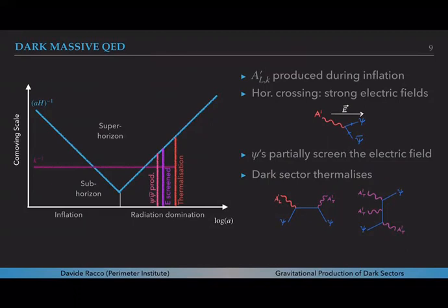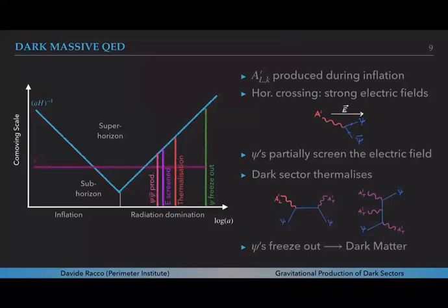With this diagram the longitudinal degree of freedom converts into a transverse one by scattering. Important processes are number changing processes like this one because we need to decrease the large number density of vectors we have at the beginning to get to a thermal state. Once we have this thermal bath of particles in the dark sector which is decoupled from the standard model bath, at some point there will be the standard freeze-out story. When ψ the dark matter becomes non-relativistic, the annihilation processes will freeze at some point and ψ, its abundance will freeze out just as in the standard WIMP story.